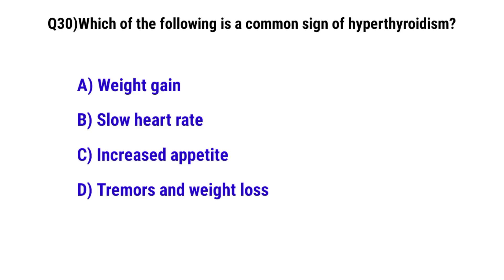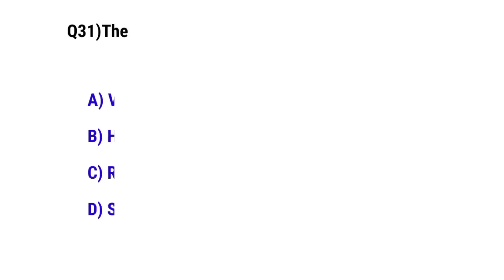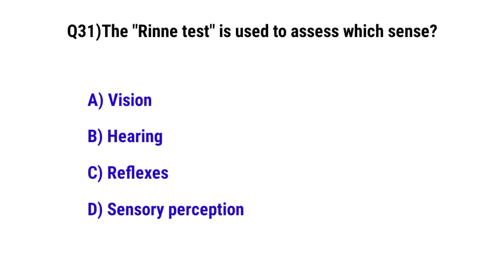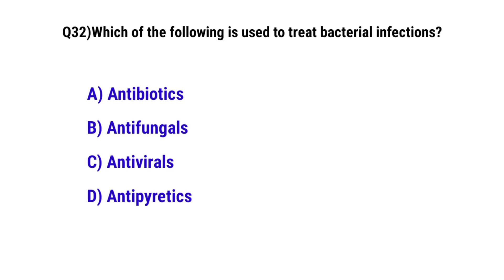Question No. 30: Which of the following is a common sign of hyperthyroidism? The correct option is D: tremors and weight loss. Question No. 31: The Rinne test is used to assess — the correct option is B: hearing.